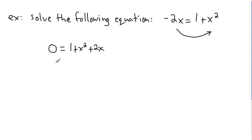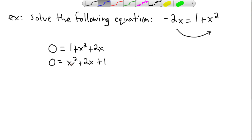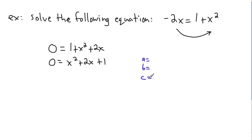Now I want to write it in a nicer form so I can recognize it. I'll put the x² term first, the x term second, and the constant last — the term without any x's. Now I'm going to write down what a, b, and c are. I've got a quadratic here and I'm trying to find the zeros. If I know a, b, and c, I can use the quadratic formula to solve this. So a is 1, b is 2, and c is 1.